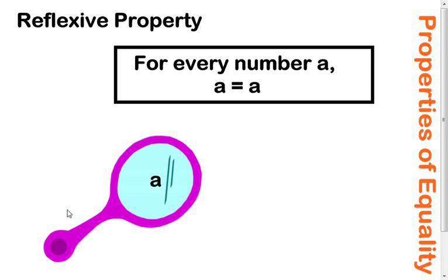So our first property of equality, which would also work as a property of congruence, would be the reflexive property. And all this is saying is a number, could be A, we're going to call it A for now, is equal to itself. So you could replace this with 5. It's going to say 5 equals 5, or 7 equals 7. When you get into congruence, an example of this would be segment AB is congruent to segment AB. Pretty straightforward. Something's going to be equal to itself or something's going to be congruent to itself.